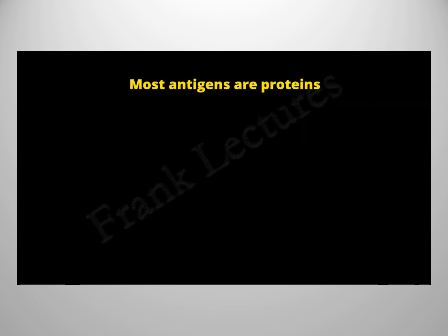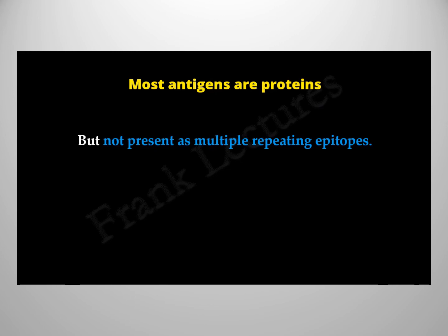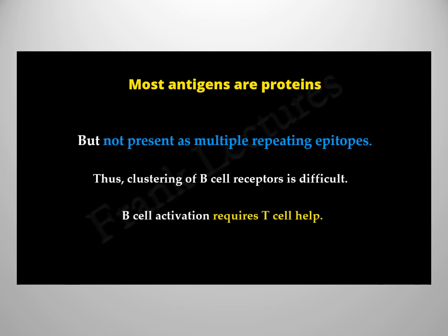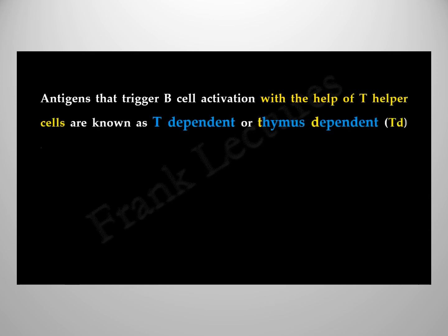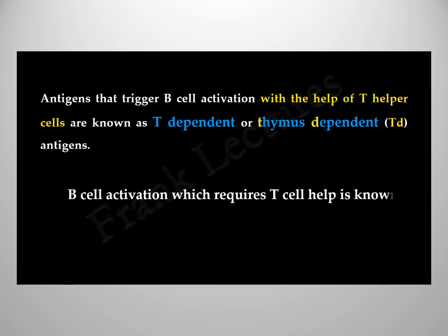Most antigens are proteins in their chemical nature — they form the largest group of antigens but do not contain multiple repeating units, making cross-linking of B cell receptors difficult. So when a B cell encounters protein antigens, T cell help is required to trigger B cell activation. Antigens that trigger B cell activation with the help of T helper cells are known as T dependent or thymus dependent antigens, and this process is known as T dependent B cell activation.